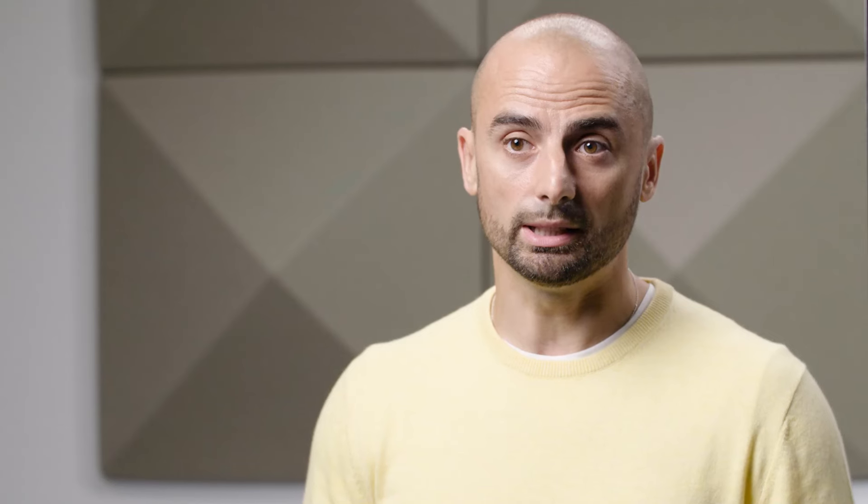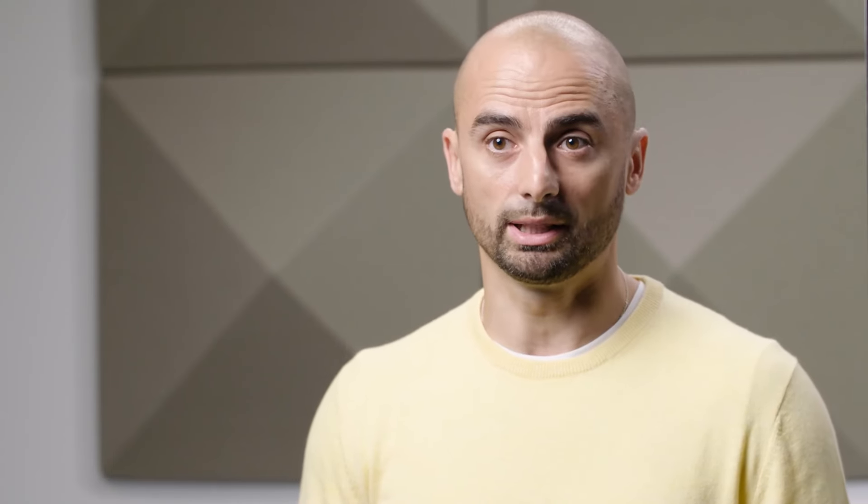The functionality and exposed controls of this example design reflect the input options on the development kit, such as push buttons and DIP switches. The constrained control options result in lightweight and optimized application software, but do not necessarily allow the design to show its true potential and rich features.